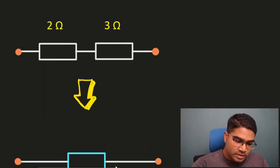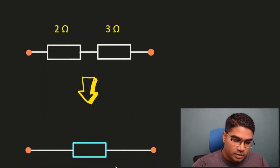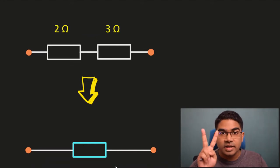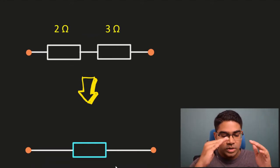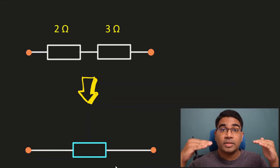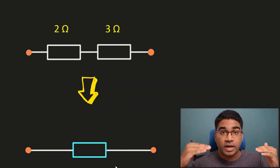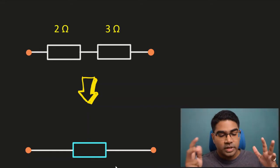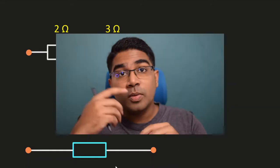So let's look at this. This is part of a circuit. You can see two resistors that are connected in series, which means they are along the same path of current. The current only has one path here, therefore they are in series.